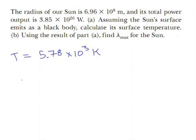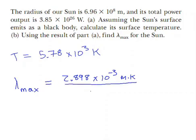The wavelength of maximum intensity, lambda max, given by Wien's law, is 2.898 times 10 to the negative third meters degree Kelvin, over the temperature, which is 5.78 times 10 to the third degrees Kelvin.